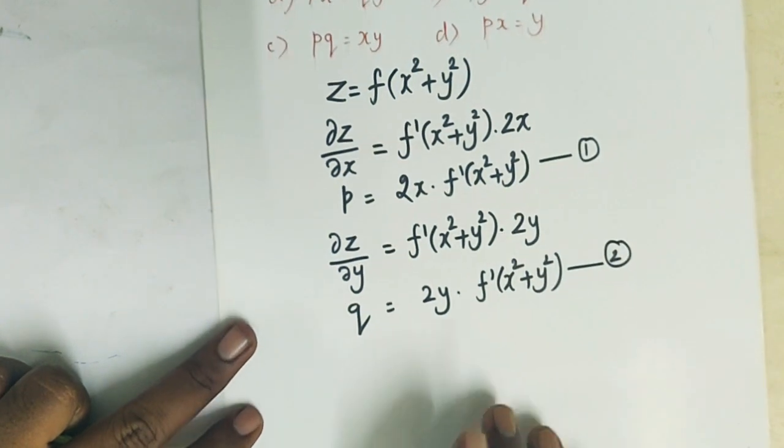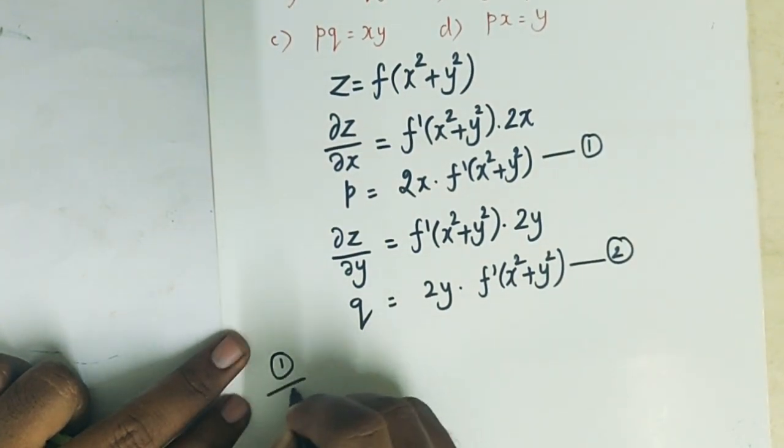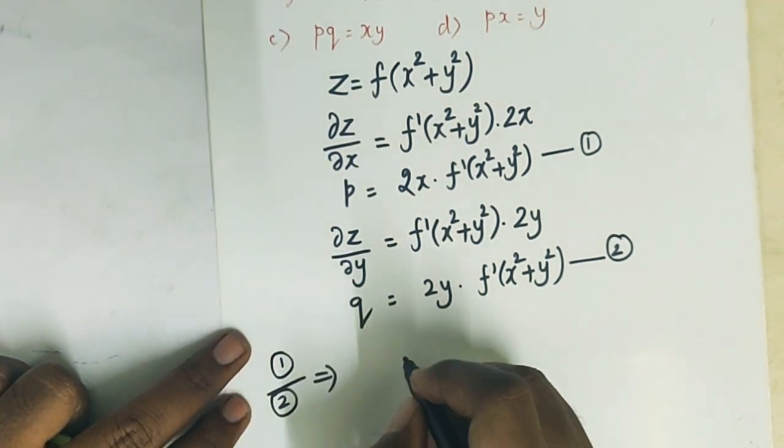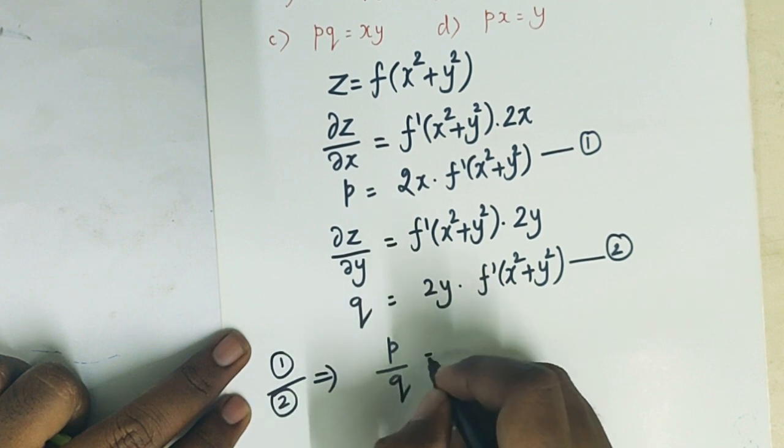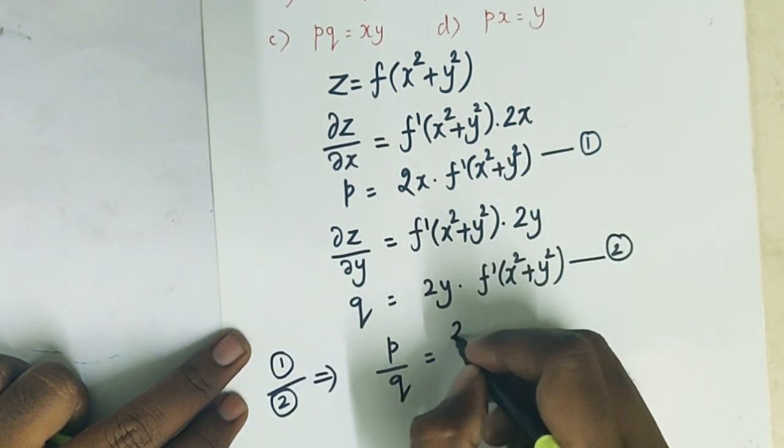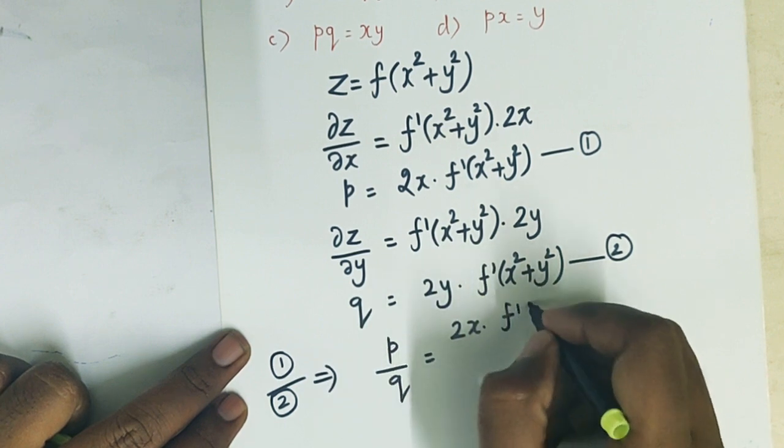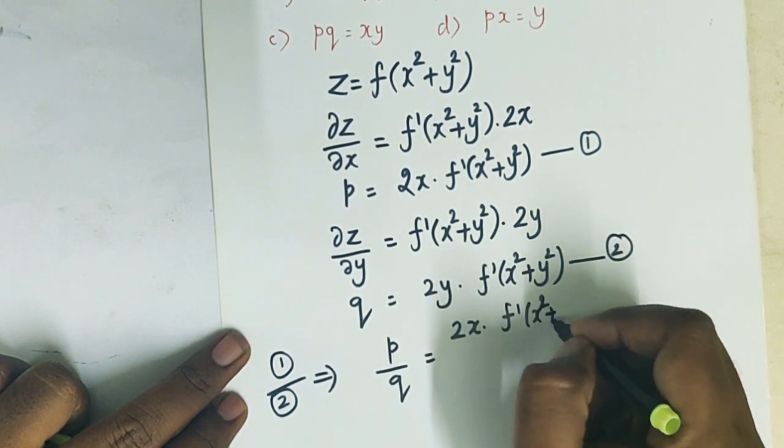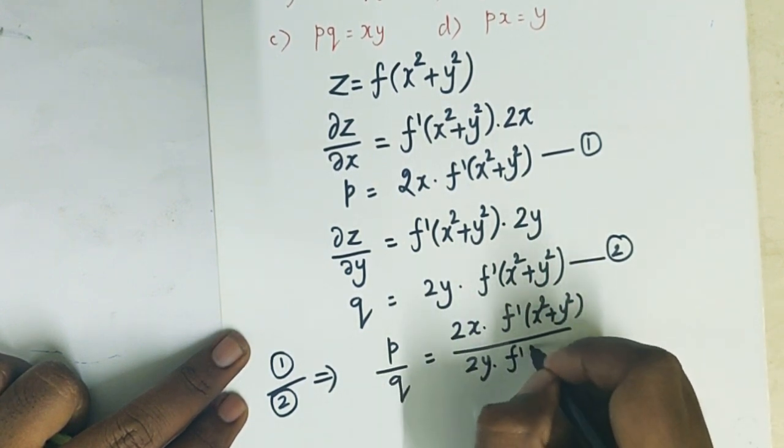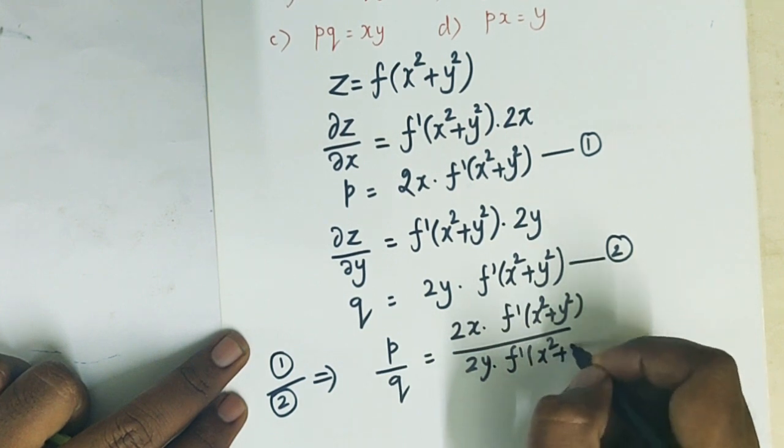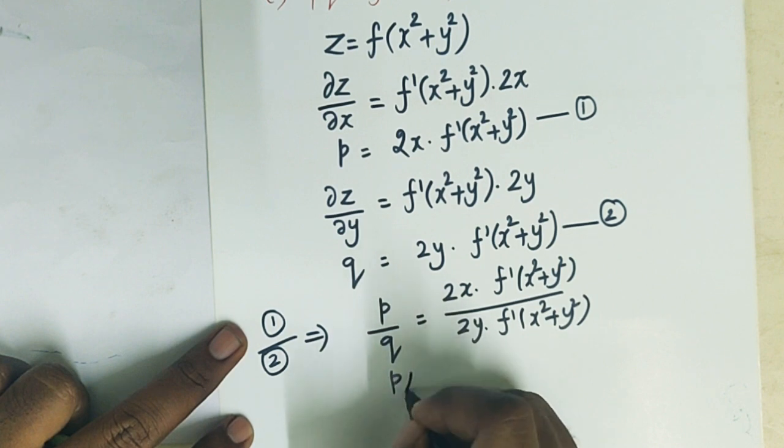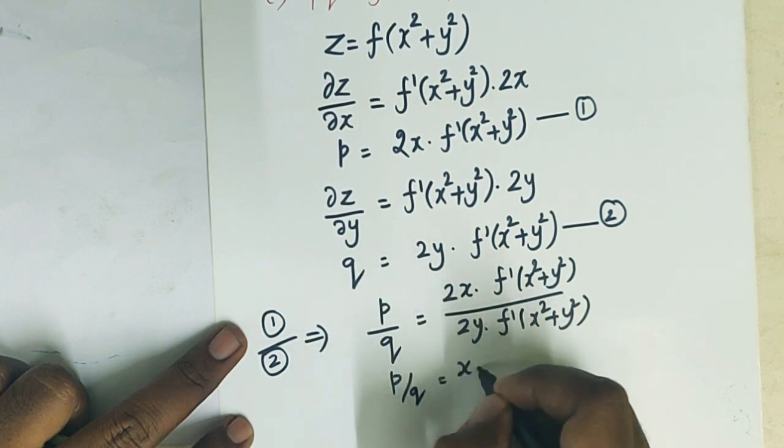Now divide 1 by 2. So dividing, f dash of x square plus y square by x over f dash of x square plus y square by y. So f dash cancels out, giving us simply p by q equal to x by y.